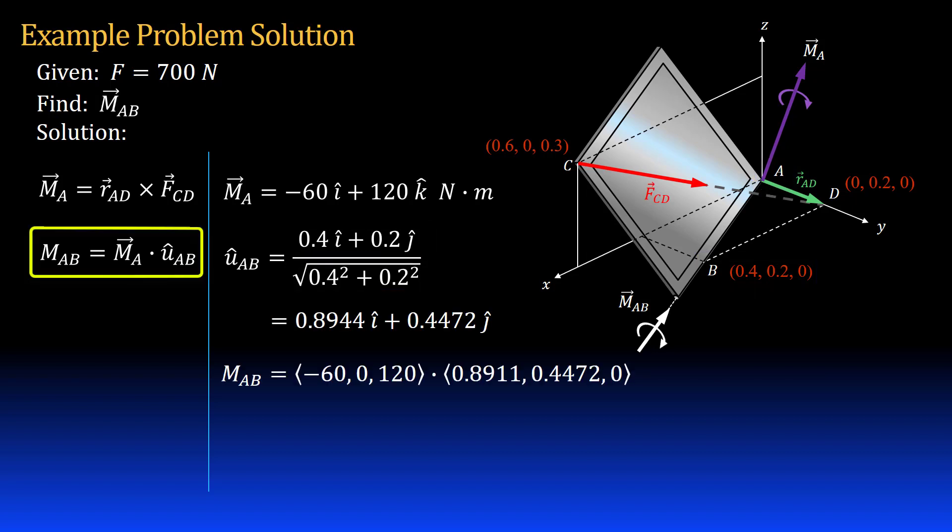Now I take the dot product of vector M_A and unit vector u_AB to get the magnitude of the projected vector. Remember that the result of a dot product is a scalar. It is negative 53.7 newton meters.